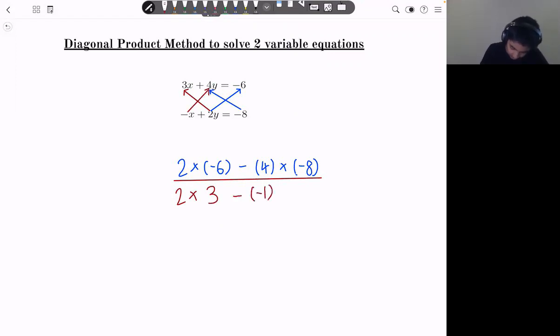And then subtract it from the value of negative 1 times 4. So negative 1 times 4, which is equal to negative 12 plus 32, divided by 6 plus 4, which is 20 divided by 10, which is equal to 2. So x equal to 2.